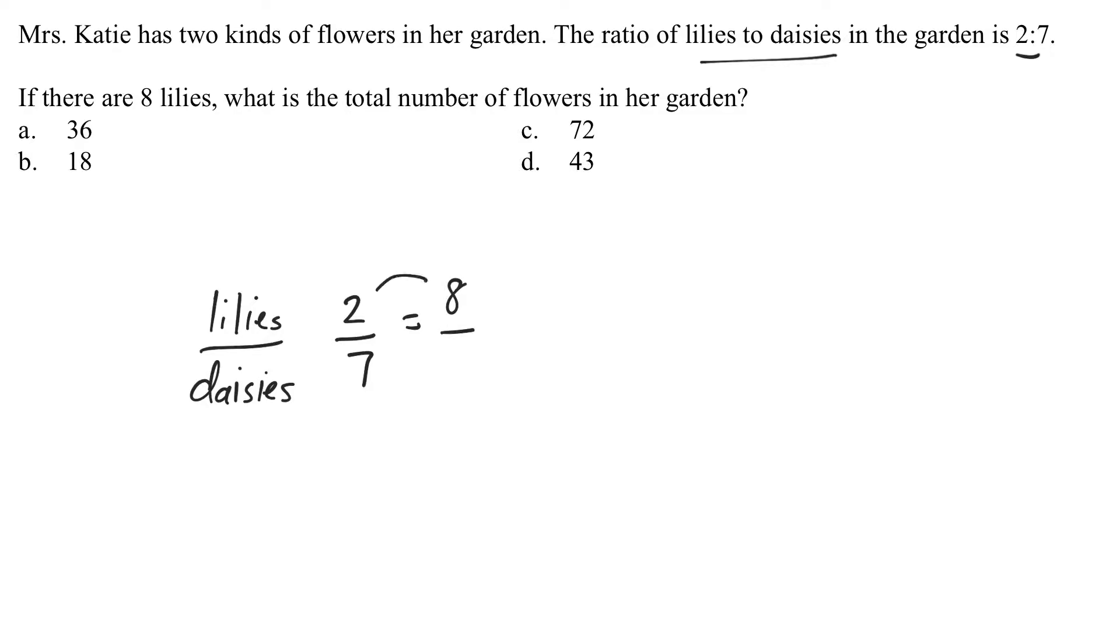And I could see that two times four is eight. So I'd multiply seven times four and that would be 28. So there are eight lilies and there are 28 daisies.